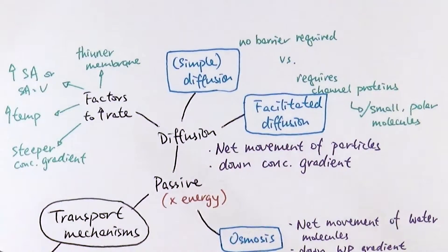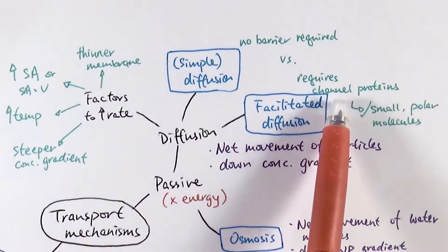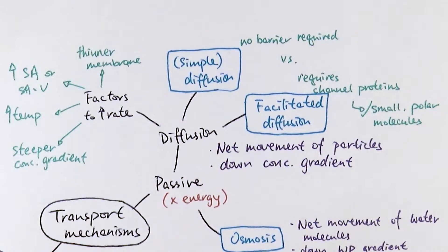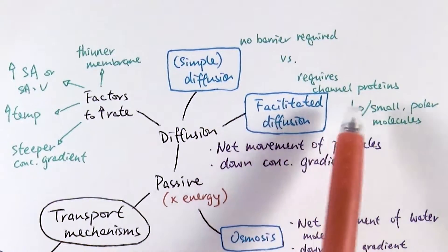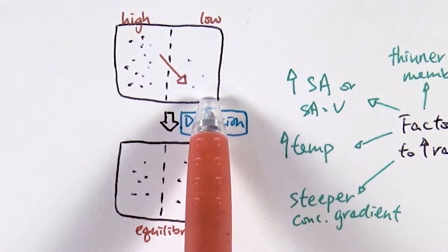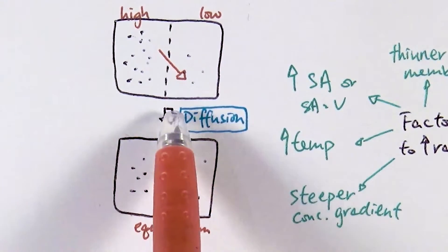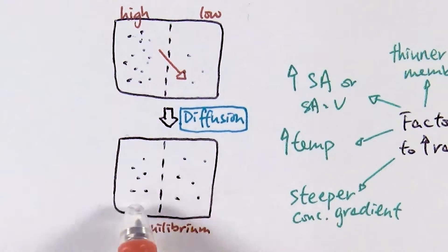For simple diffusion, you don't need a barrier. It could be things like spraying perfume in a room — it slowly spreads across. It can also apply to molecules diffusing across a membrane without relying on protein channels. But if something is small and polar, it would need facilitated diffusion — diffusion across channel proteins. Things such as water and mineral ions use facilitated diffusion. In this case, the membrane is described as selectively permeable, because channel proteins are specific to certain molecules only.